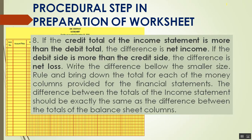If the credit total of the income statement is more than the debit total, the difference is net income. So if the credit side is higher than the debit side under the income statement, that means net income. But if the debit side is more than the credit side, the difference is net loss.